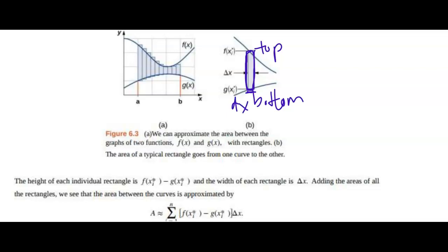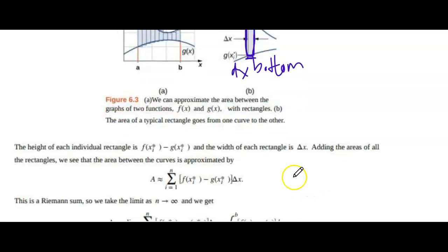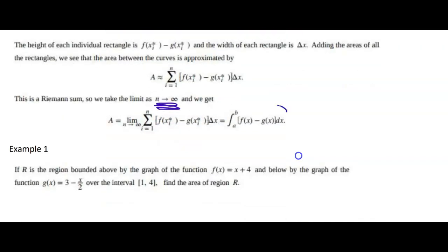Now, of course, we're going to make that change in x be as small as possible. We're going to let the number of rectangles go to infinity in theory. And when we do that, we get that nice smooth curve. And so this is how we're going to find the area between two curves.